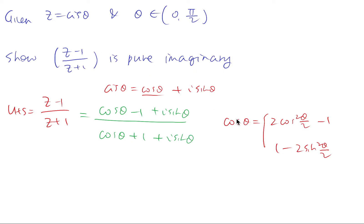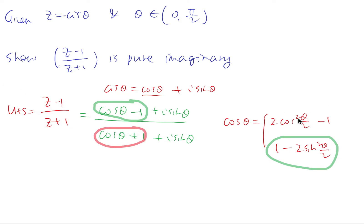Cos θ has multiple double angle formulas. When we have minus 1, we will choose the one with plus — therefore we would choose cos θ minus 1 with 1 minus 2 sine squared (θ/2), so the 1s get cancelled. And if we have cos θ plus 1, we would choose 2 cos squared (θ/2) minus 1, therefore minus 1 plus 1 they get cancelled.